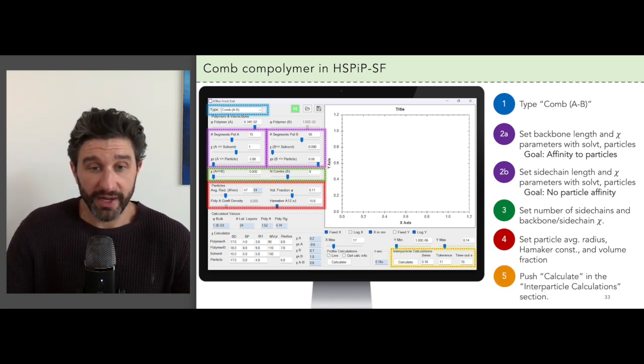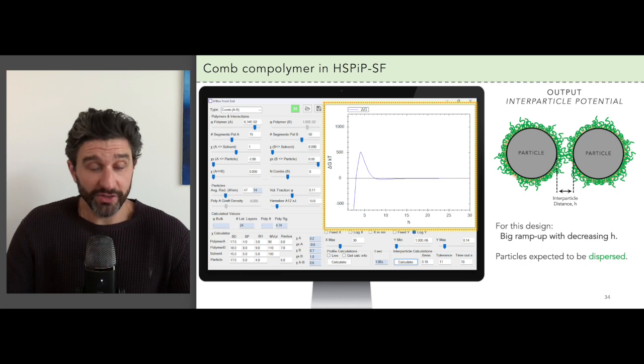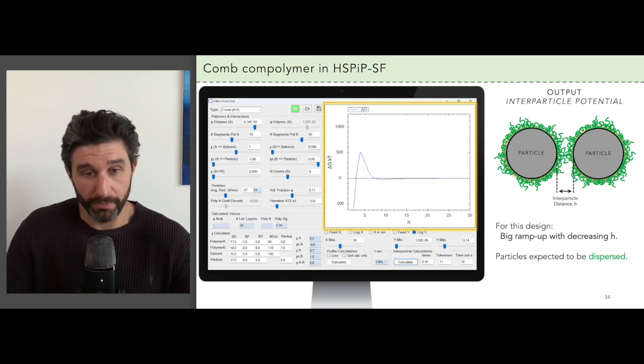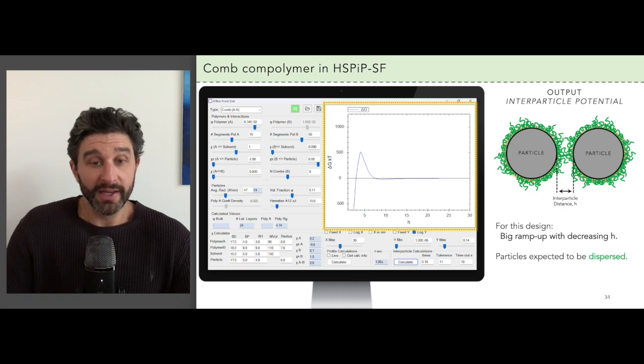With these all in place, we can go ahead and click the calculate button in the interparticle potential box. The output shown actually looks really characteristic of a good dispersant. As we covered in the last episode, we look for a characteristic hump in the interparticle potential, meaning that the polymers are doing their micropillow action.